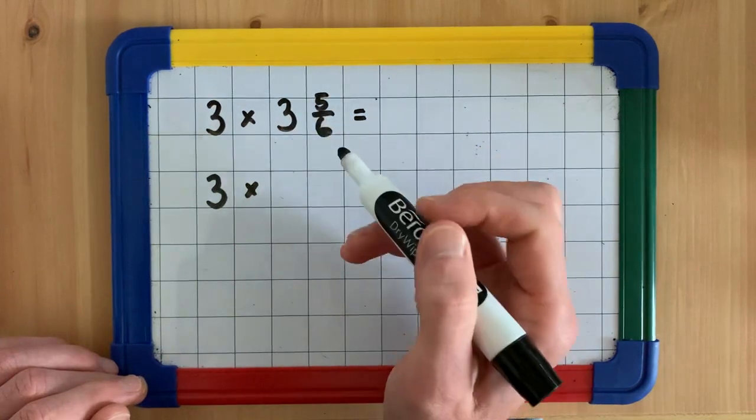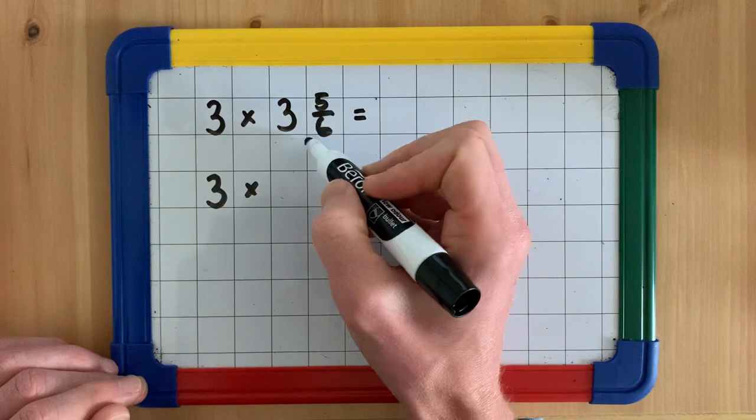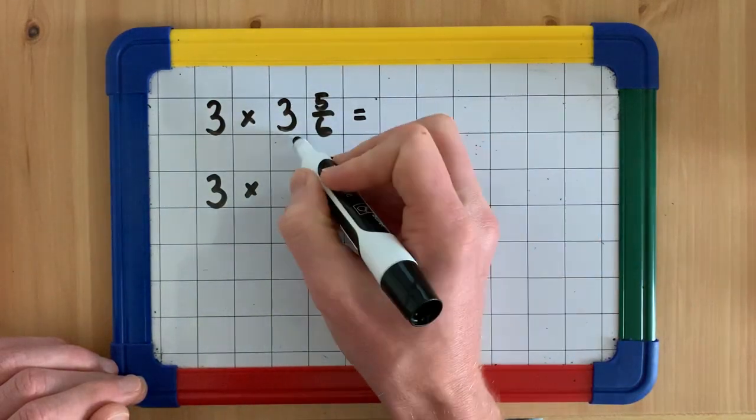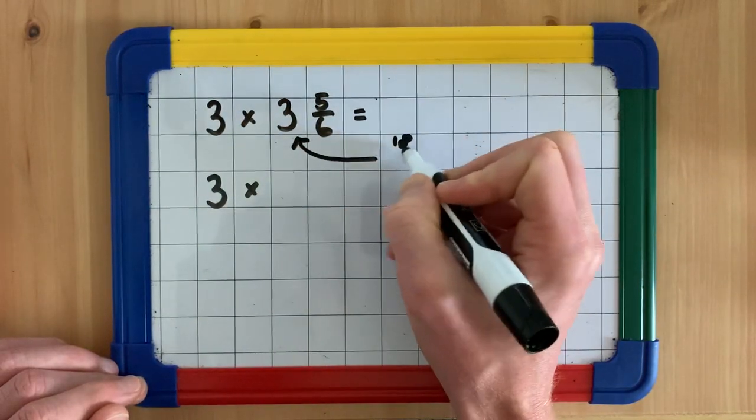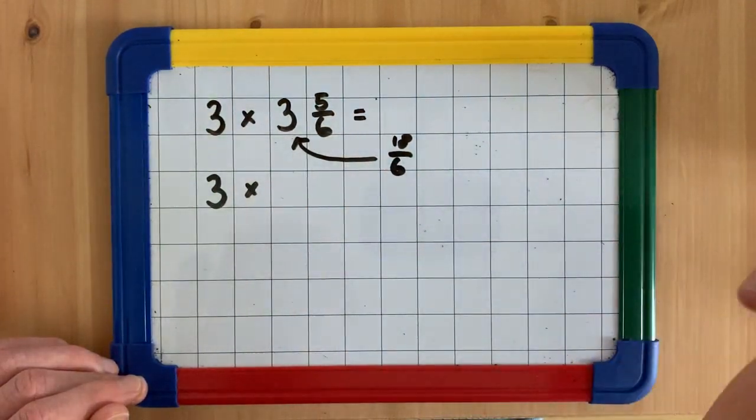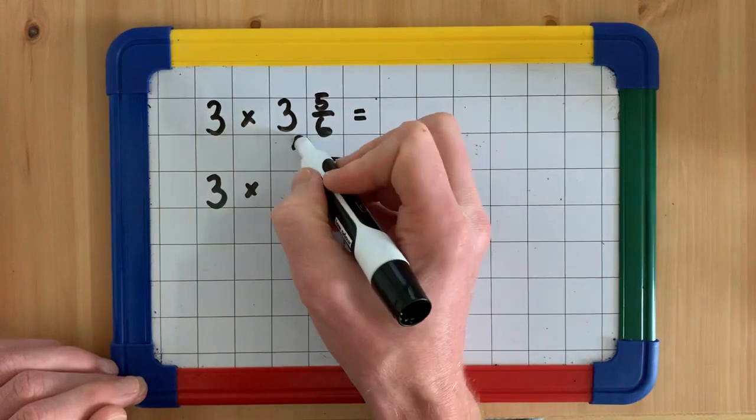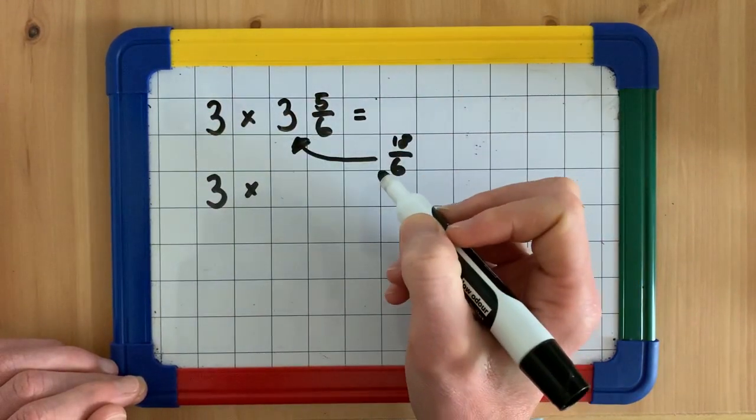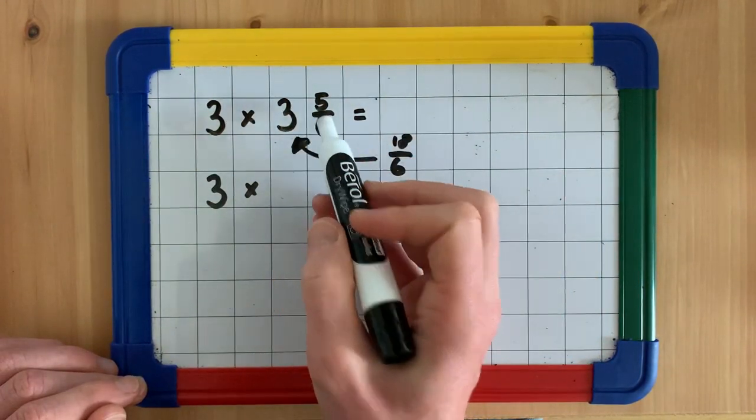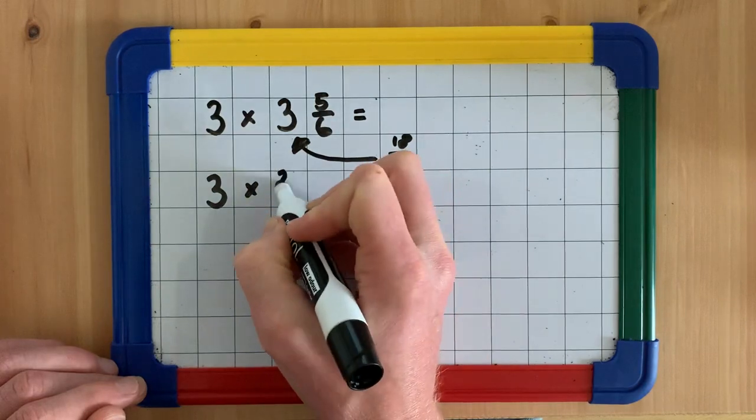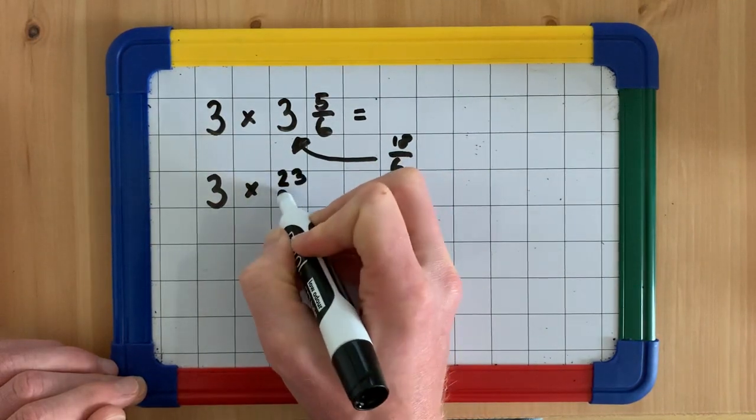So, 3 wholes is 18 sixths. 6 sixths add 6 sixths add 6 sixths. 3 times 6 makes 18. So we've got 18 sixths. 18 sixths add 5 sixths makes 23 sixths.